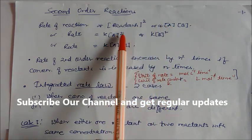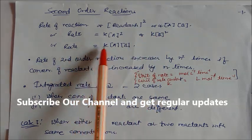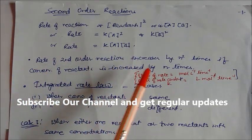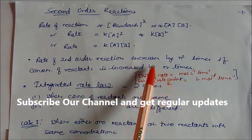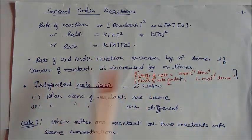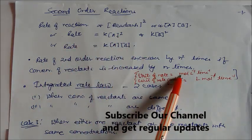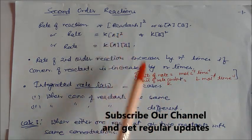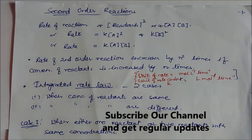For the same reactant, we can write the concentration of A squared, or the square of the concentration of B. Or rate is equal to K into concentration of A into concentration of B. The rate of the second order reaction increases by n² times if the concentration of reactant is increased by n times. The unit of the rate constant K is liter per mole per time.